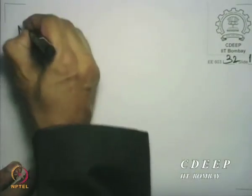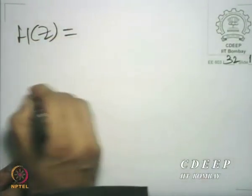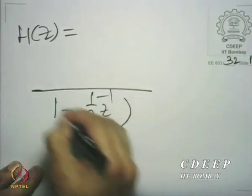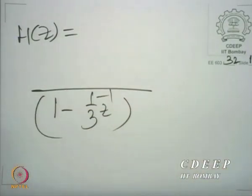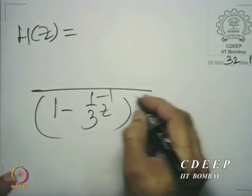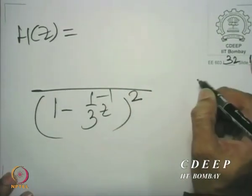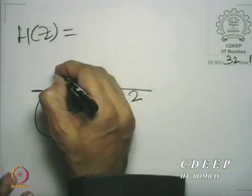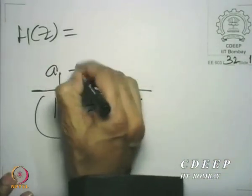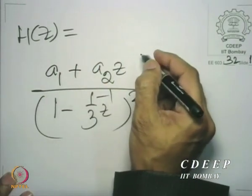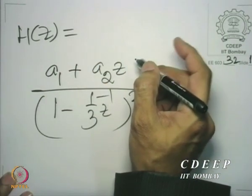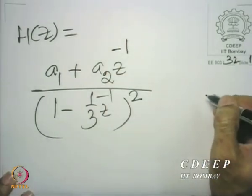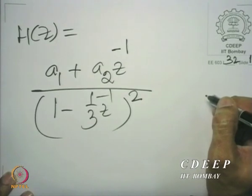We could express this in one way as something divided by 1 minus 1 third z inverse. Now here is where the problem comes. You could have 1 minus 1 third z inverse squared in the denominator, with A_1 plus A_2 z inverse in the numerator. You need to allow the possibility of degree 1 less.